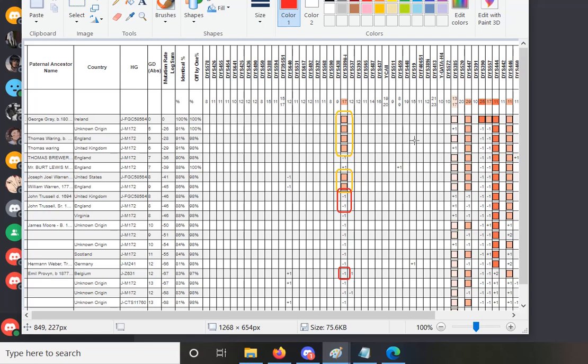Some of them are Warings, some of them are Trussell, and some of them have different surnames. One of the different surnames is Gray. And one thing that I found, if you look at STR Match Finder, it's ranked.